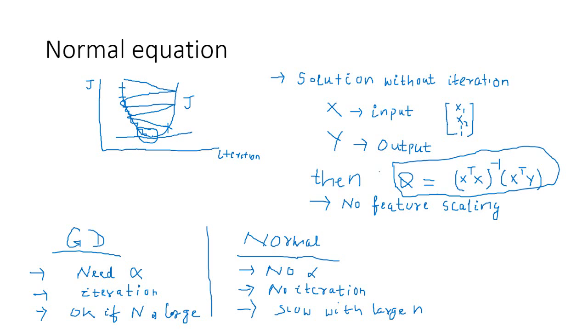Whereas, in normal equation algorithm, you directly get to the bottom, you directly get to the minimum value of the cost function without having to go for any iteration.